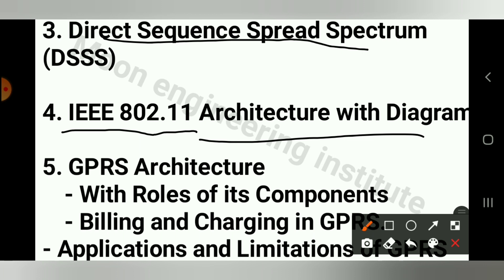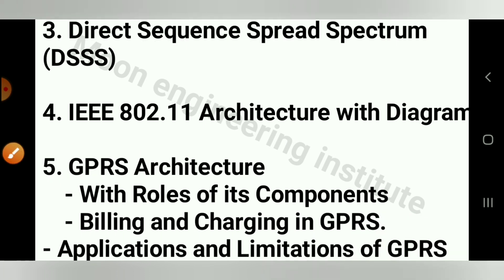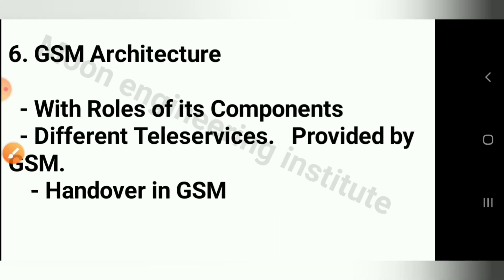Next question, number 5, is GPRS Architecture with roles of its components, billing and charging in GPRS, and also applications and limitations of GPRS. This is our fifth question.